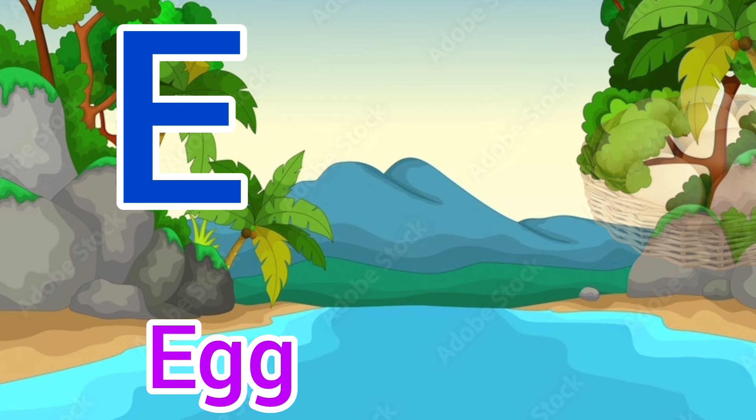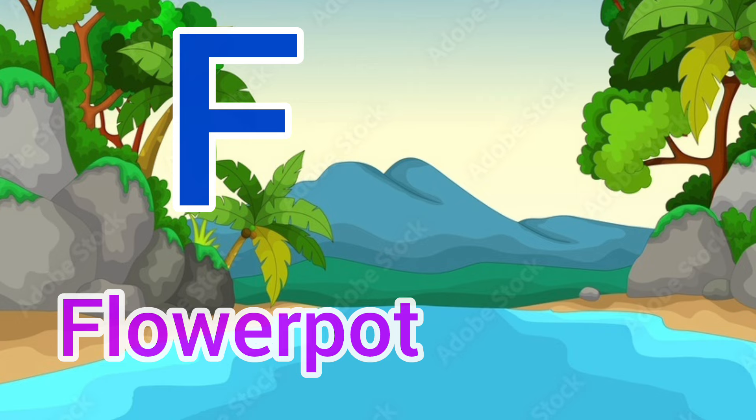E for egg, egg means anda. F for flower pot, flower pot means gamla.